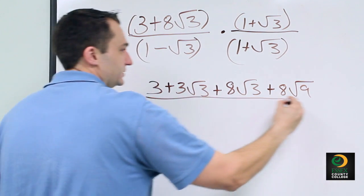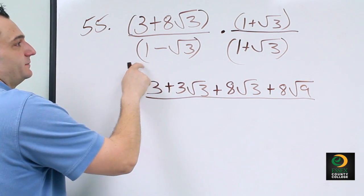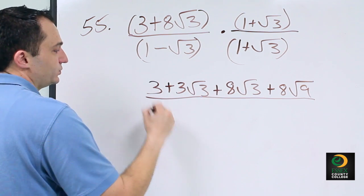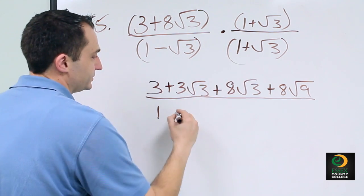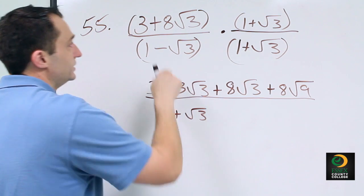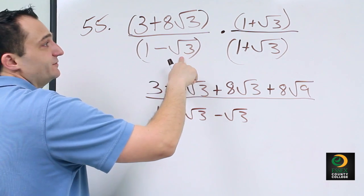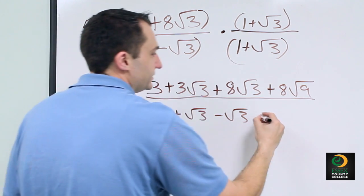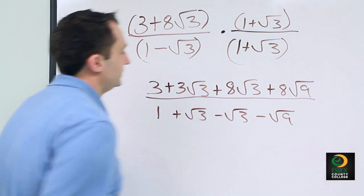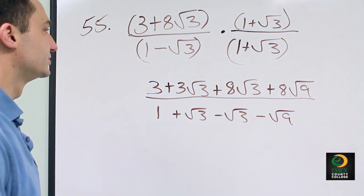All over, same thing on the bottom. 1 times 1 is 1. 1 times radical 3 is plus radical 3. Negative radical 3 times 1 becomes minus radical 3. And negative radical 3 times radical 3 becomes minus radical 9. Now we have to simplify our fraction.